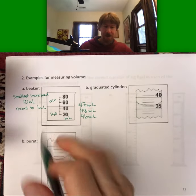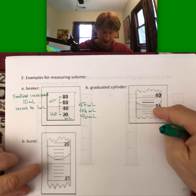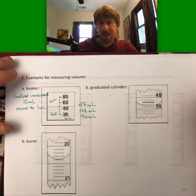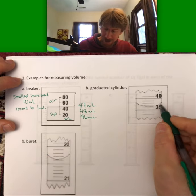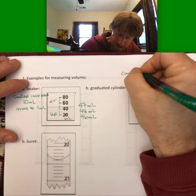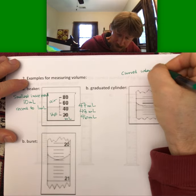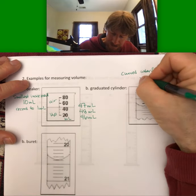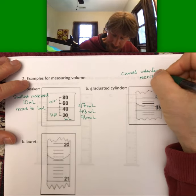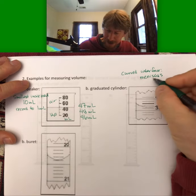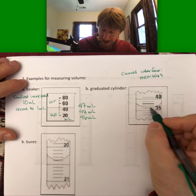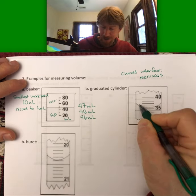Now, beakers tend to be big. Graduated cylinders and burettes tend to be smaller. And especially when you're reading glass graduated cylinders and burettes, you'll see this curved interface. And that curved interface has a name. It's called the meniscus.